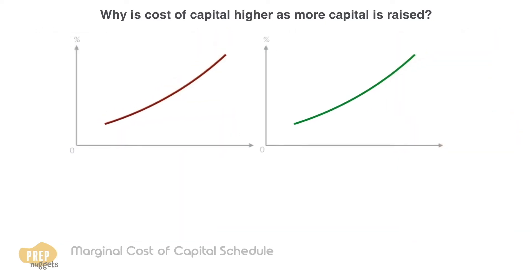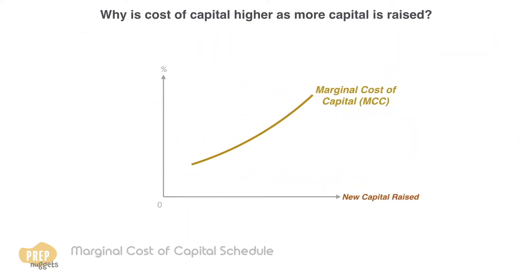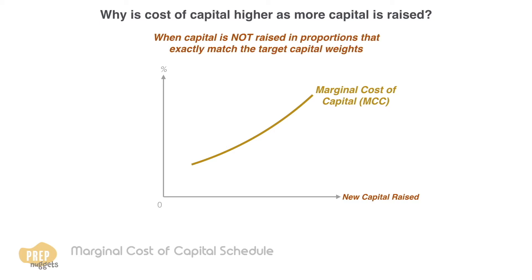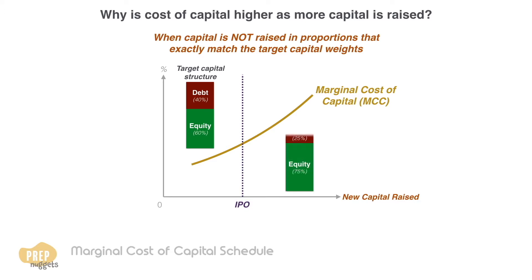The marginal cost of capital can also increase when capital is not raised in proportions that exactly match the target capital weights. For example, a firm's target capital structure can be 40% debt, 60% equity. However, due to a large IPO, the proportion of equity may be raised to 75% temporarily. Such a temporary deviation may increase the firm's cost of capital because cost of equity is higher than cost of debt.